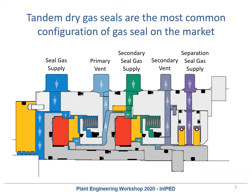The next is the secondary seal gas supply, historically also called the buffer gas supply, but API 692 names it the secondary seal gas supply. This is typically nitrogen injected into the outboard stage of a tandem dry gas seal. The nitrogen flows across the intermediate labyrinth directly above the outboard stage, keeping any leaking process gas from the inboard seal away from the outboard stage and forcing it all up the primary vent.